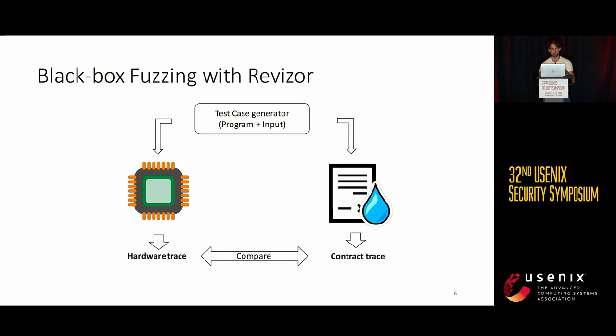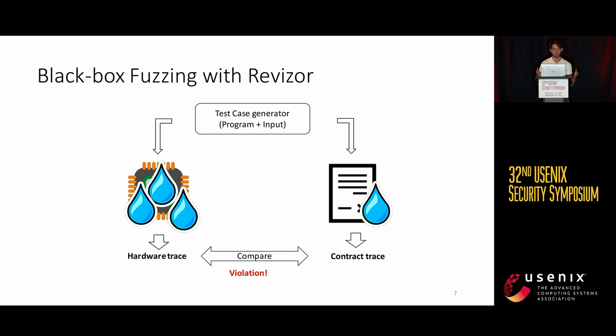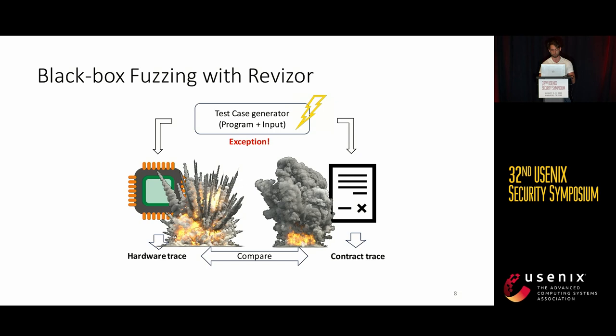But there is very little work on modeling and describing the behavior of the CPU upon exceptions. Previous work already used the contract — a formal description — to compare the execution of random programs and inputs on the model and on the CPU. A test case generator produces random programs and inputs. These run on both the real hardware and on a model, which is an executable version of the contract. Traces are produced and compared, and if the CPU leaks more information than what's allowed by the contract, we have what is called a violation.